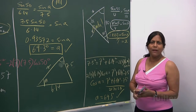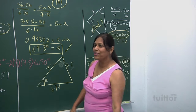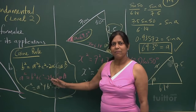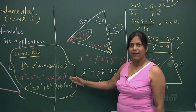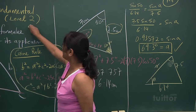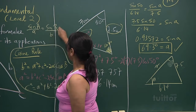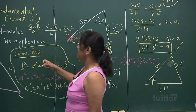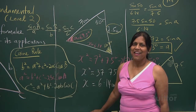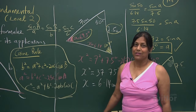Quick general revision: cosine rule — a squared equals b squared plus c squared minus two bc cos A. Sine rule — sine A over a equals sine B over b equals sine C over c. With these two fundamental rules we can work out all the angles and sides of any triangle, and next I'll teach you how to find the area of a non-right-angle triangle.